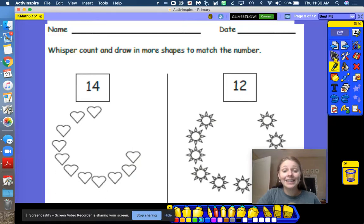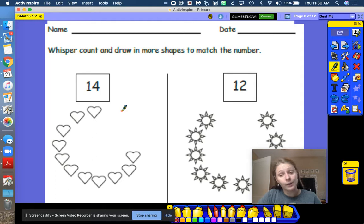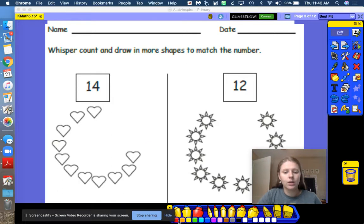All right, friends, I need your help. The number is written in the box, but I don't think I have that many hearts. So we need to finish the picture. Let's find out how many hearts we have and how many more we need to add. I'm just going to do a circle. So we need 14 hearts.